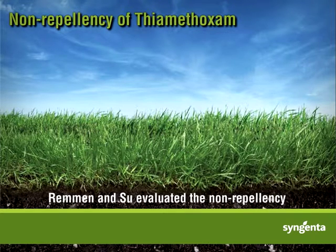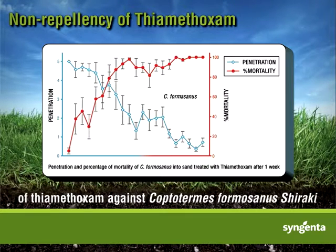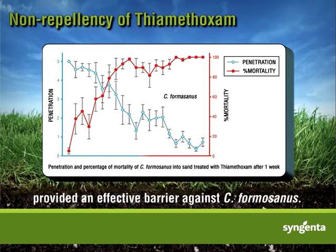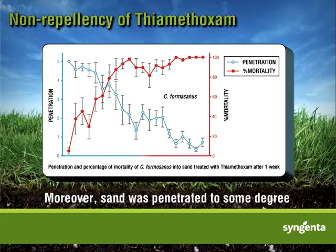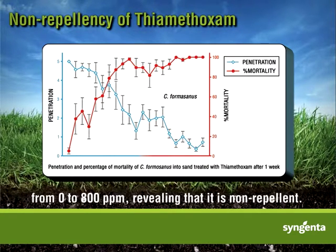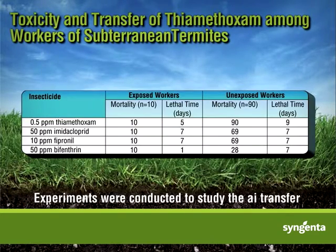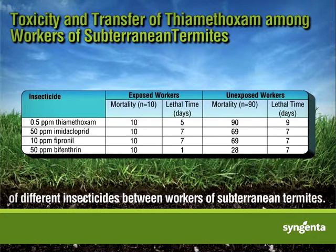Remen and Sue evaluated the non-repellency of thiamethoxam against Coptotermes formosanus shiraki. Their study showed that 8 parts per million of thiamethoxam provided an effective barrier against C. formosanus. Moreover, sand was penetrated to some degree from 0 to 800 parts per million, revealing that it is non-repellent. Experiments were conducted to study the active ingredient transfer of different insecticides between workers of subterranean termites.